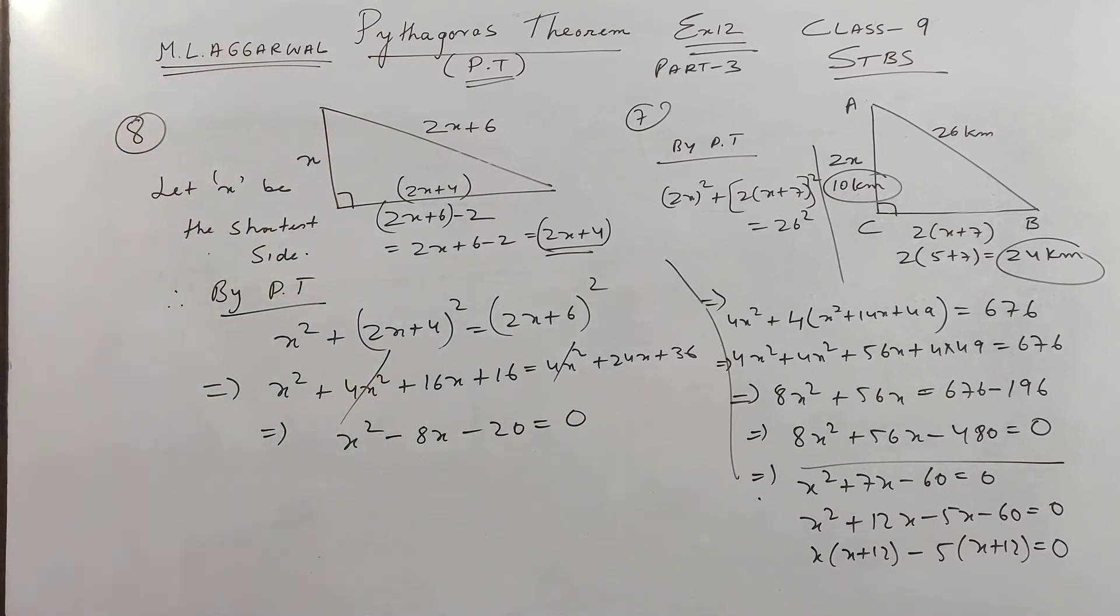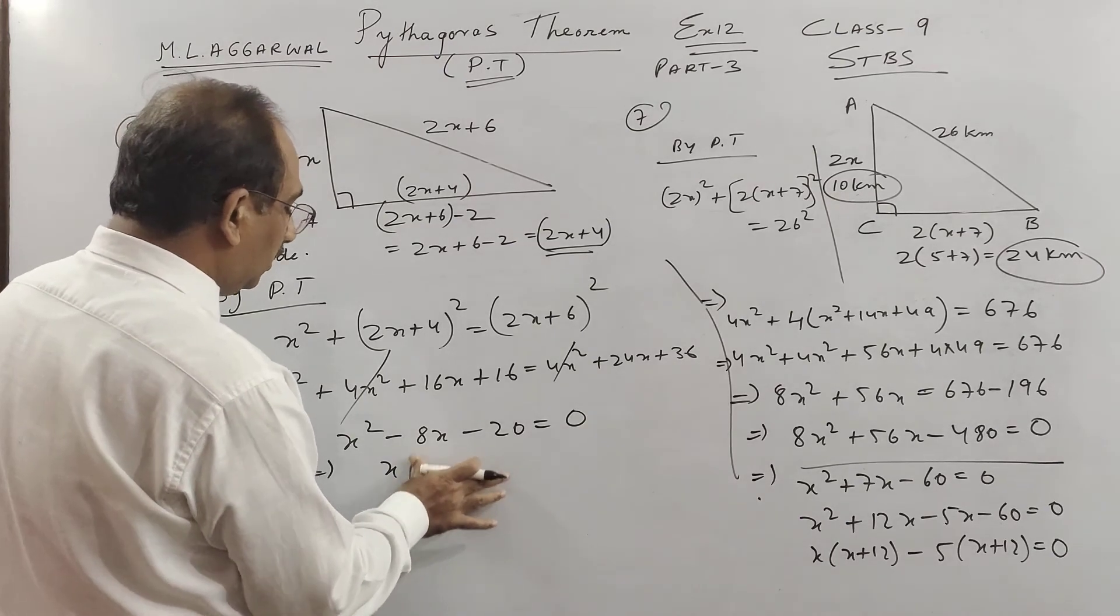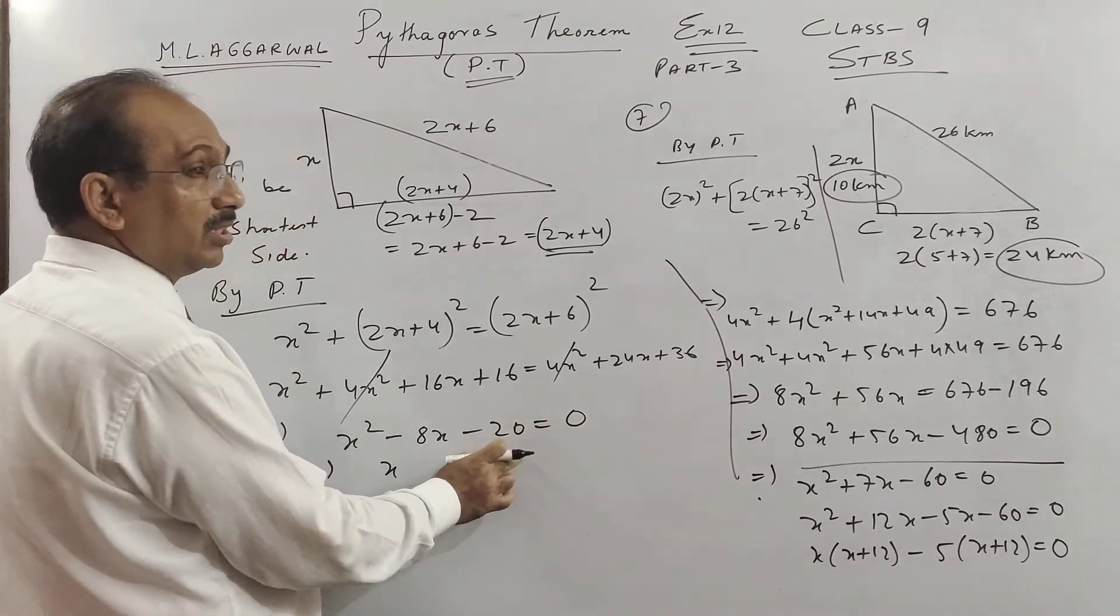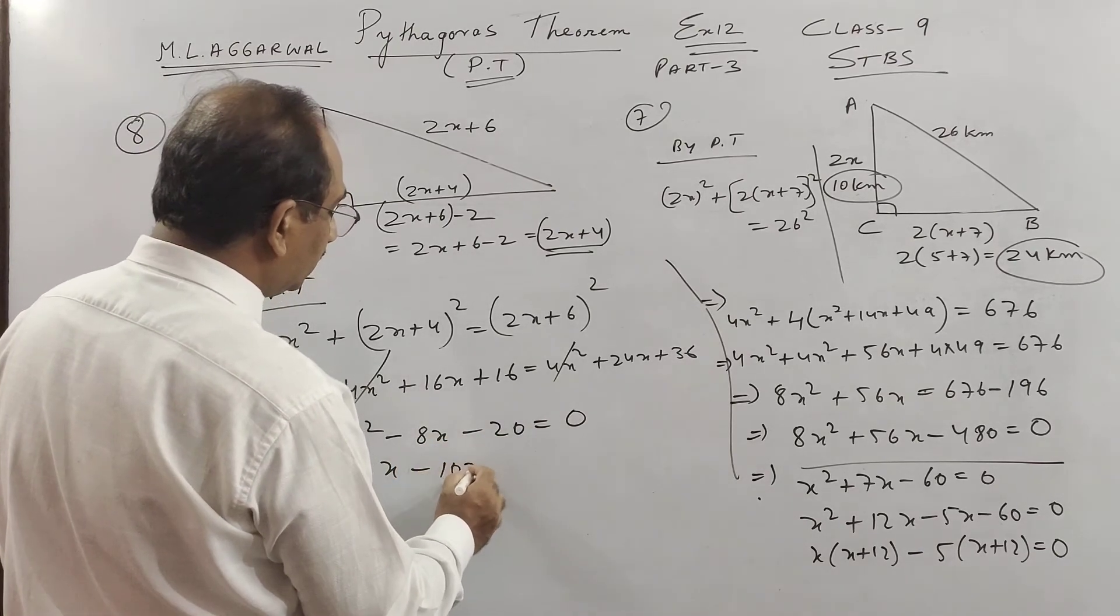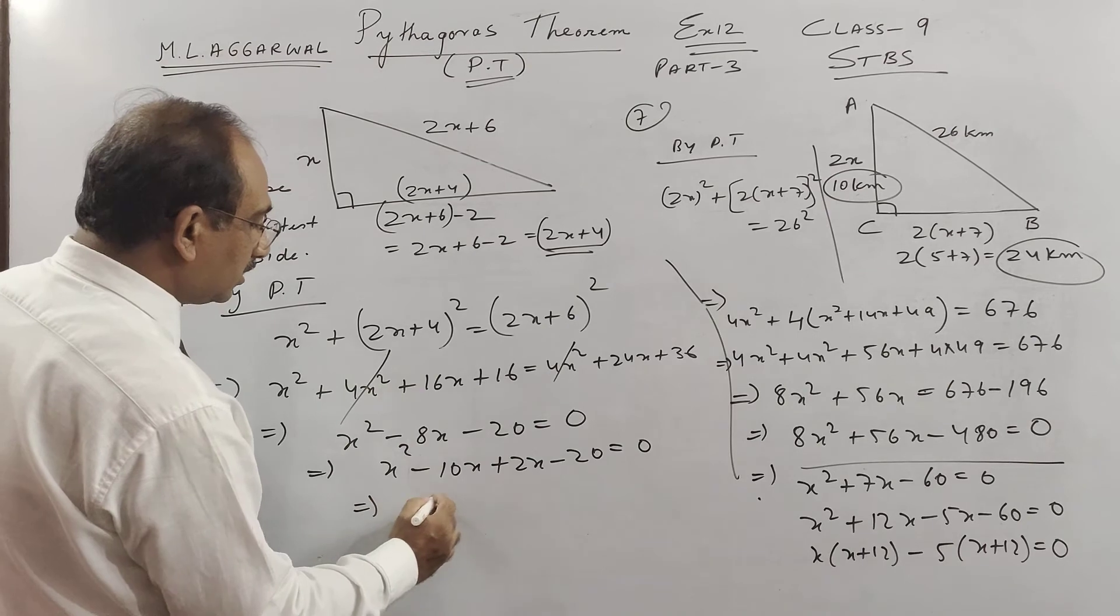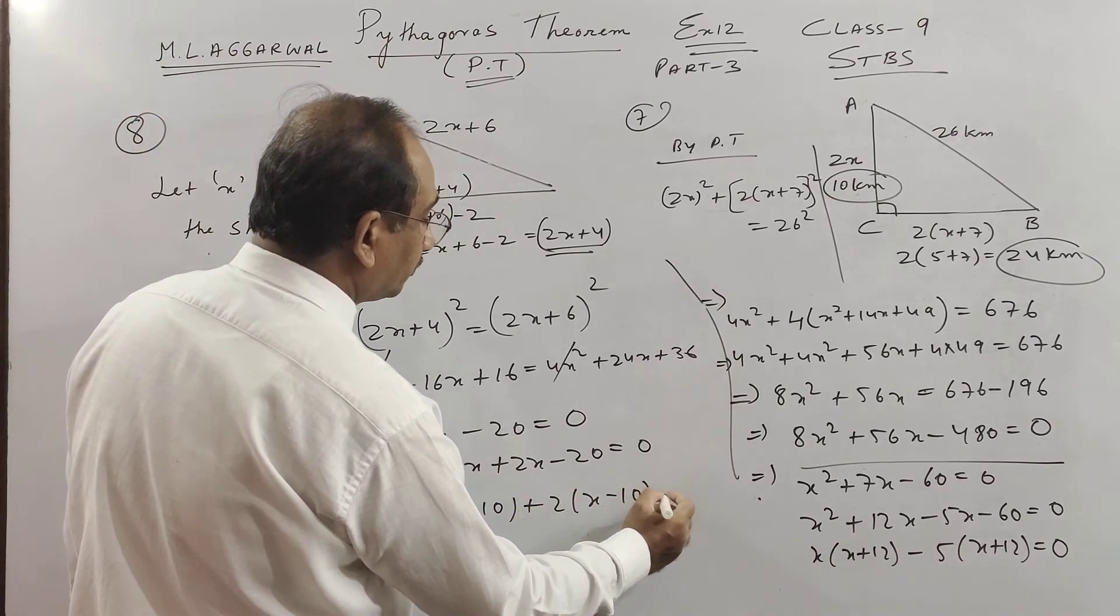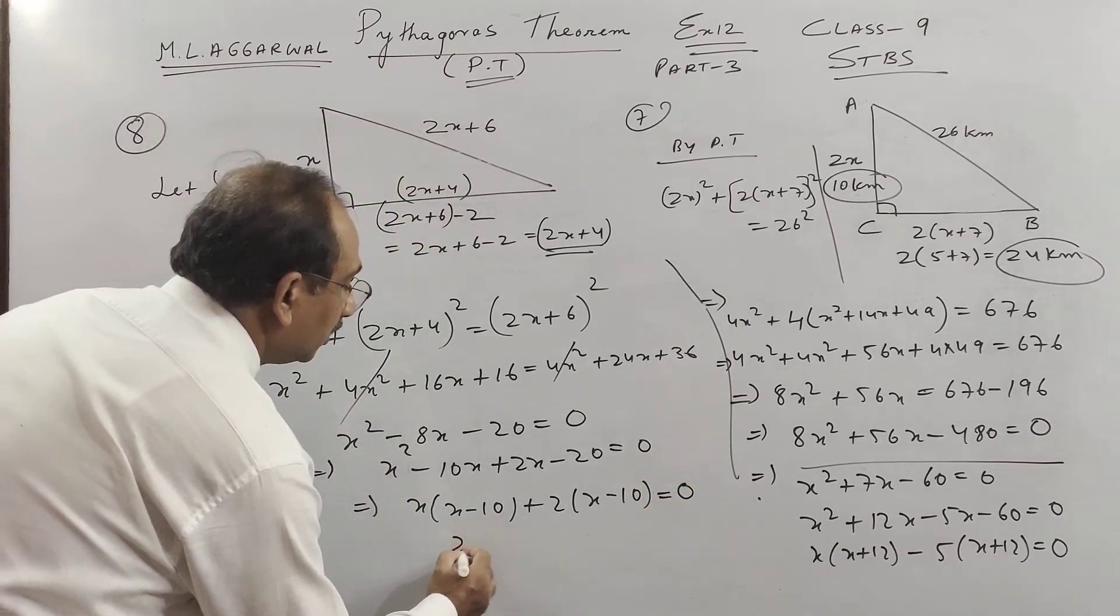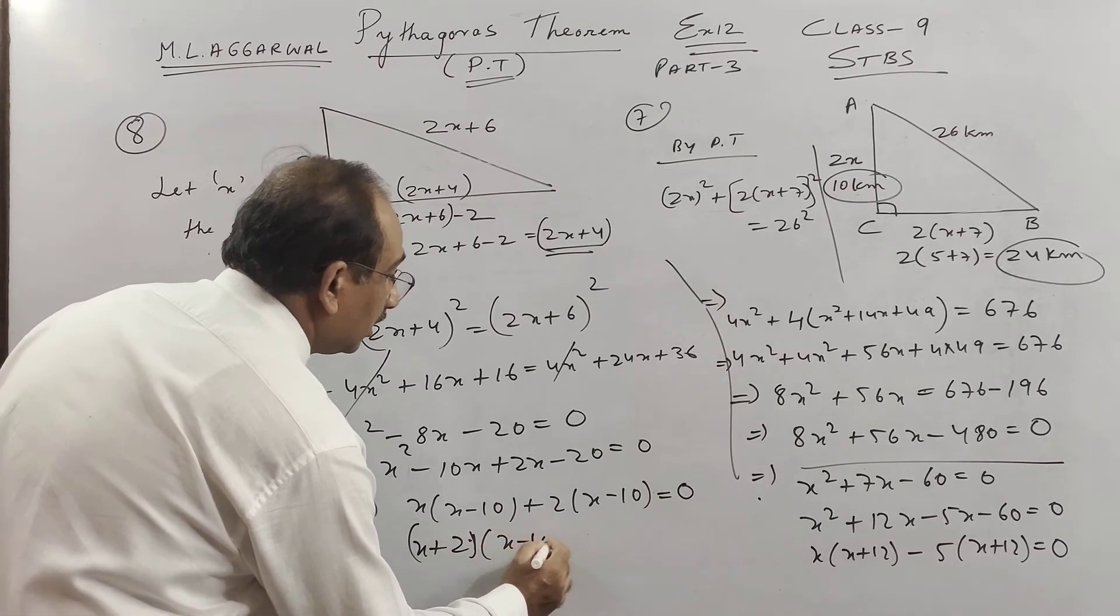So this is a quadratic equation which we get and we apply middle term breaking. This you see my video on factorization, I think third or fourth breaking of trinomial. So you have 10 to the 20, so minus 10x plus 2x. So what do we get children? X minus 10 plus 2, x minus 10. So x plus 2, x minus 10 is equal to 0.